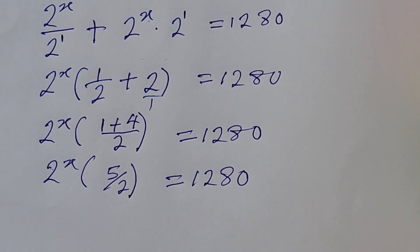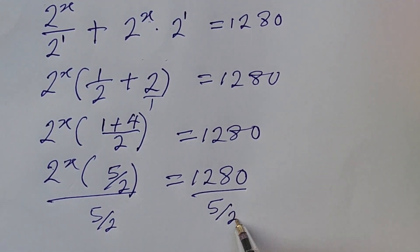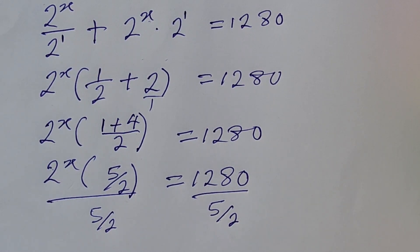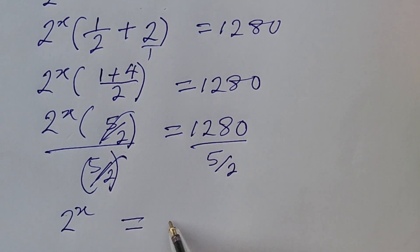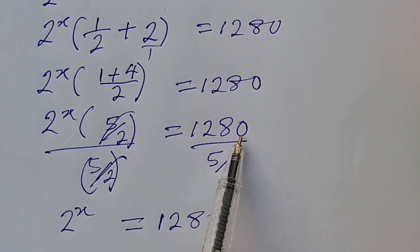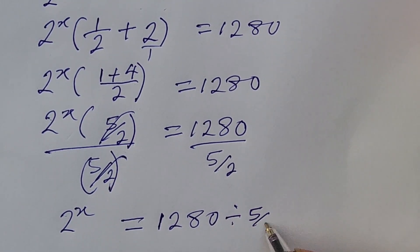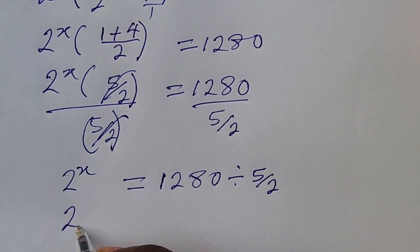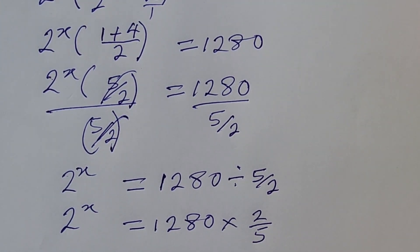We need to eliminate 5 over 2 to isolate 2 to the power of x, so we divide both sides by 5 over 2. Whatever we do to the left hand side we must do to the right hand side, according to the law of equality. So we now have 2 to the power of x equal to 1280 divided by 5 over 2, which means 1280 times 2 over 5.